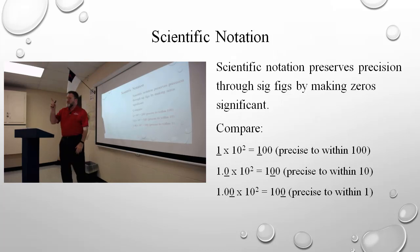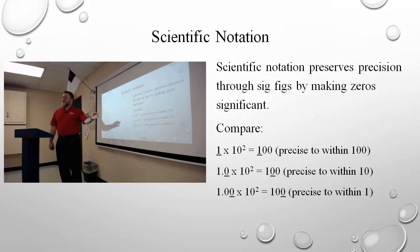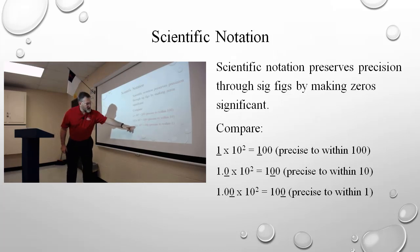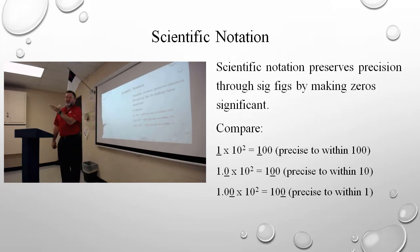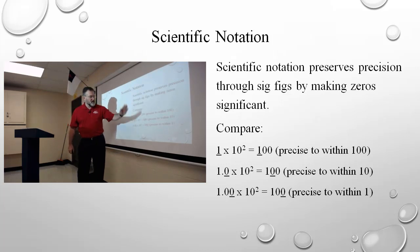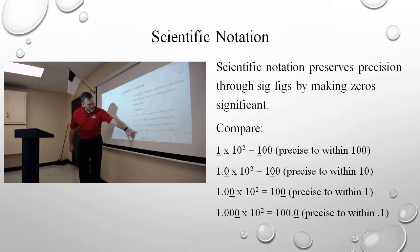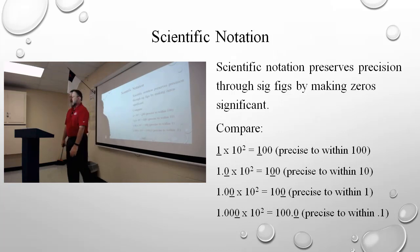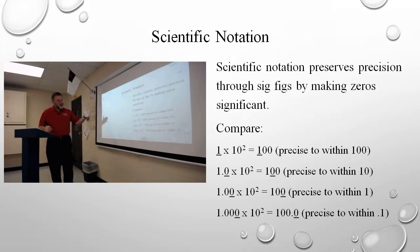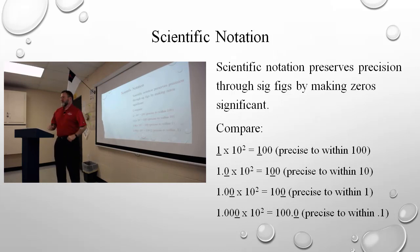One point zero zero tells me that this place is significant. And because it's significant, when I expand it out, that place is represented by this place here — that tells me that I've actually measured it to within one. Here I've measured it to within a hundred, to within ten, to within one. By using 1.000 times ten to the second, I'm showing that I'm precise to within one tenth of my measurement.